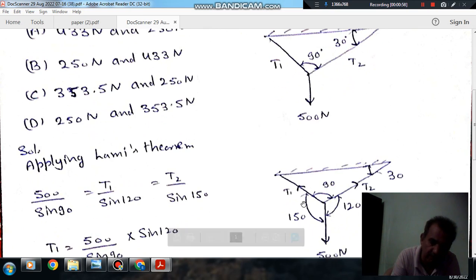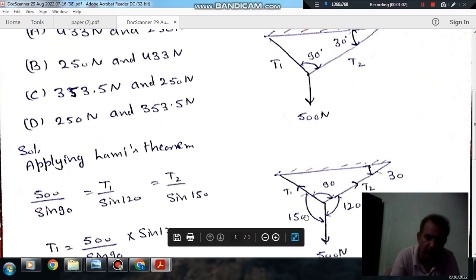If 120 is known, then this angle is 360 minus 90 minus 120, that is 150. So now all the angles between different ropes are known.